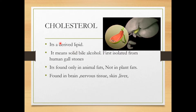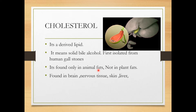Now let's take the examples for steroids. One very important example is cholesterol. Cholesterol is a derived lipid — the word means a solid bile alcohol. Bile is secreted from the gallbladder. Cholesterol was first isolated from the human gallstone. Cholesterol is found only in animal fats, not in any plant fats. Plant oils like coconut oil do not contain any cholesterol.